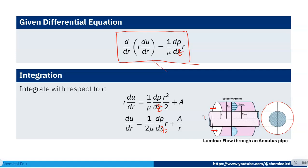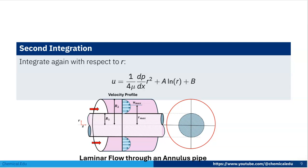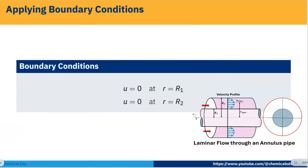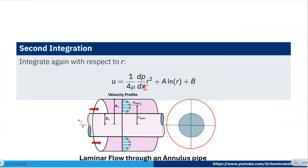This is a differential equation obtained from the Navier-Stokes equation after applying all assumptions. Integrating with respect to R, we get: R·(dU/dR) = (1/mu)·(dP/dZ)·(R²/2) + A. Integrating again gives the general velocity profile: U = (1/4mu)·(dP/dZ)·R² + A·ln(R) + B, where A and B are integration constants.